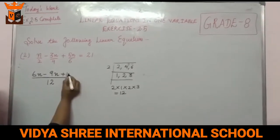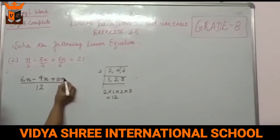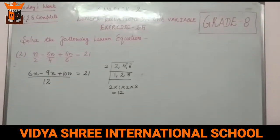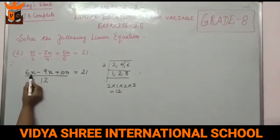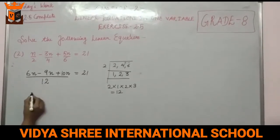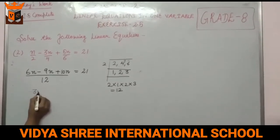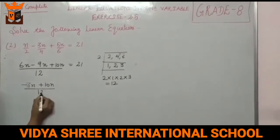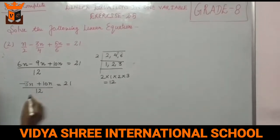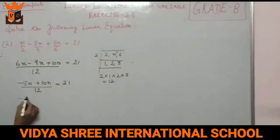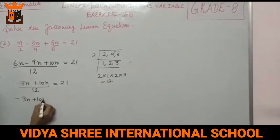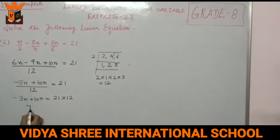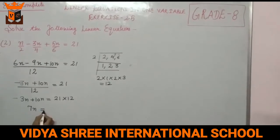Multiply 2 with 5N to get 10N. So we solve: 6N minus 9N plus 10N, divided by 12, equals 21. Minus 3N plus 10N equals 21 into 12.